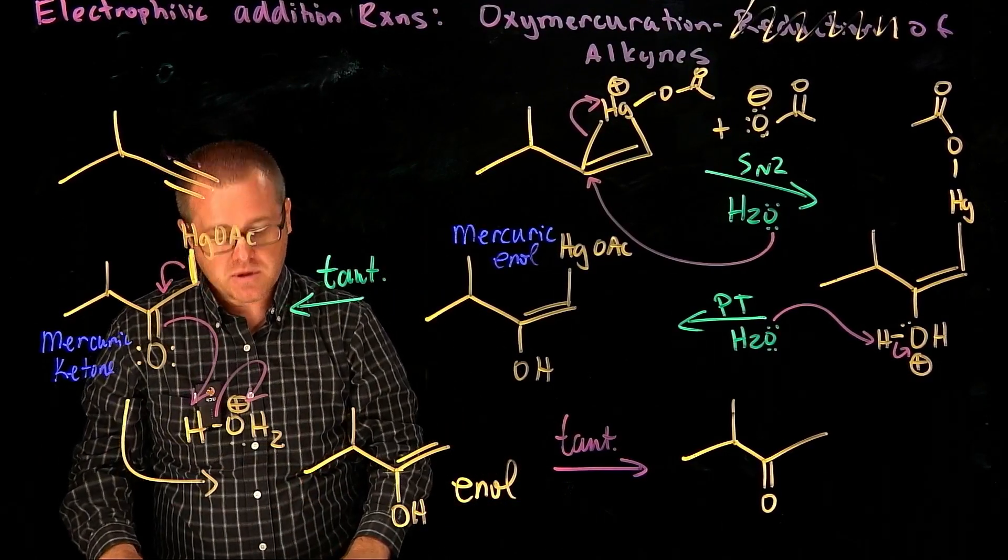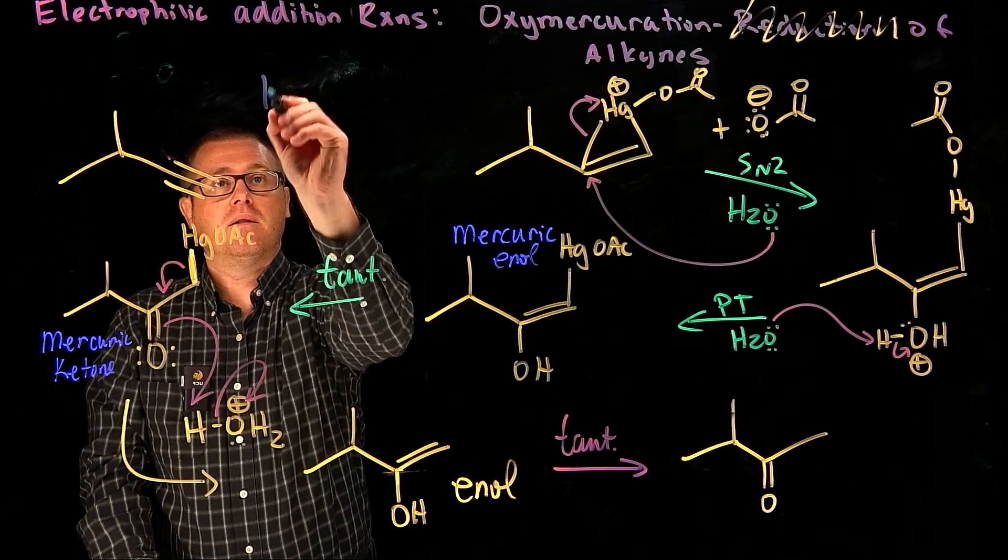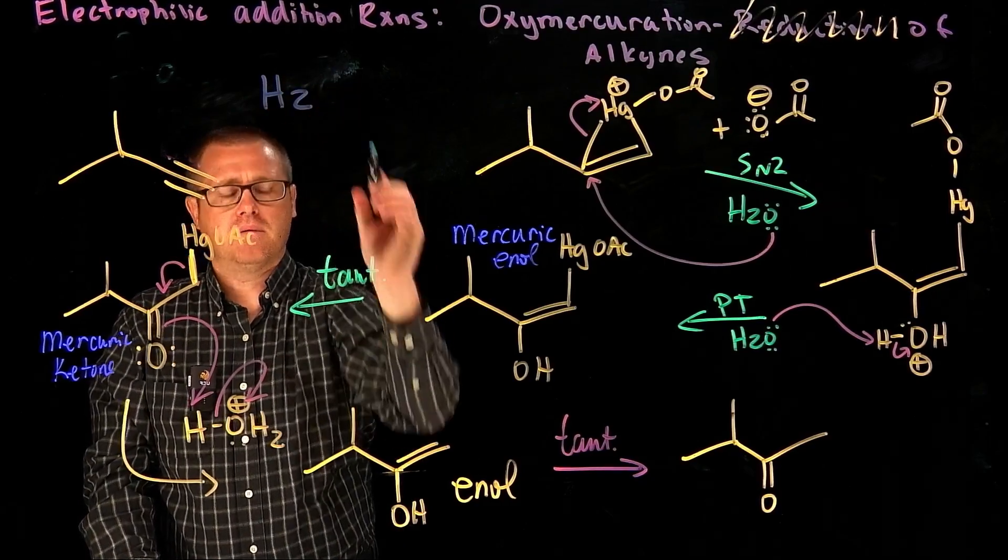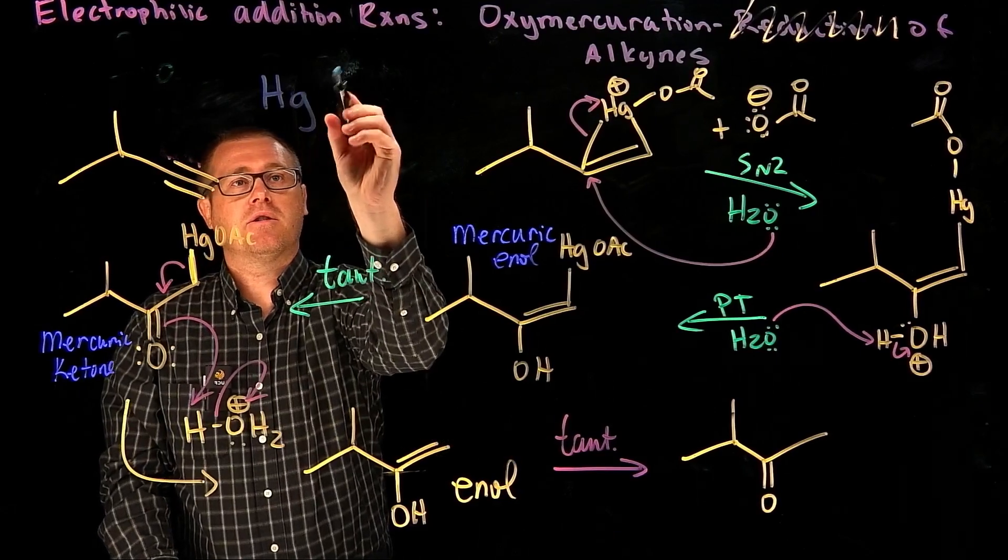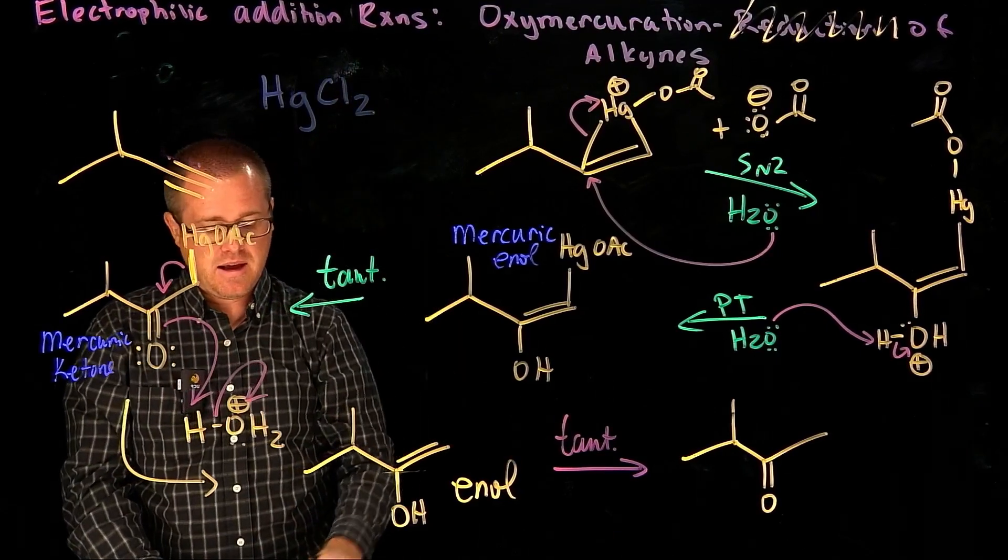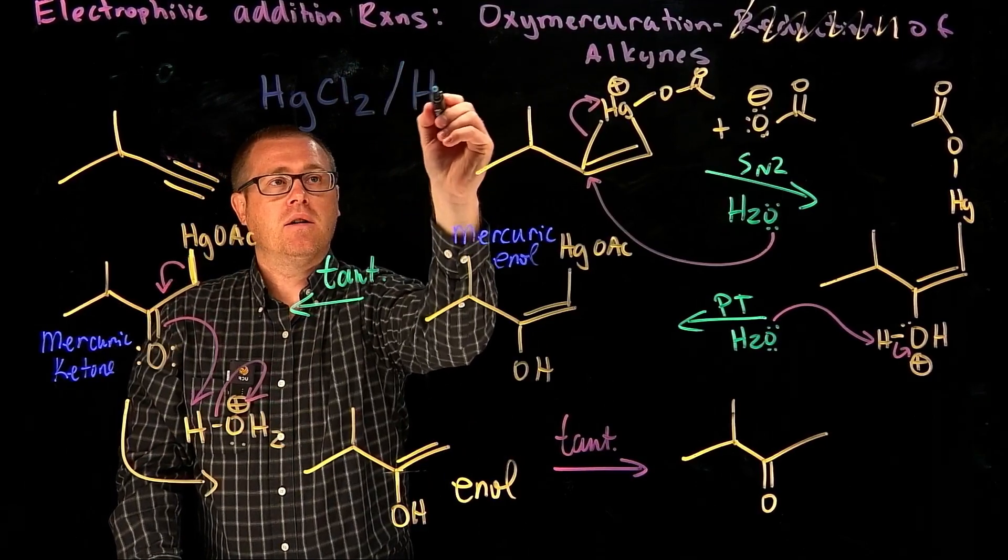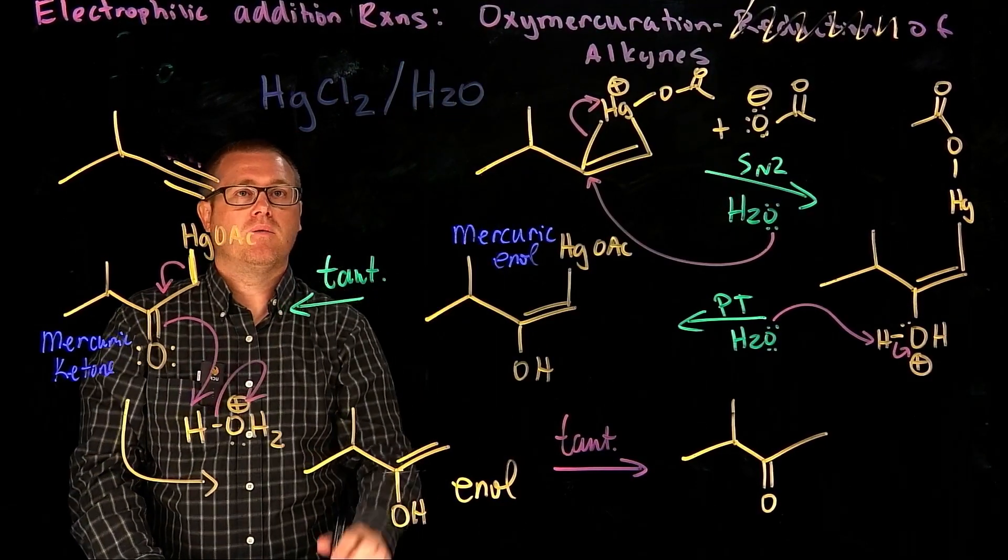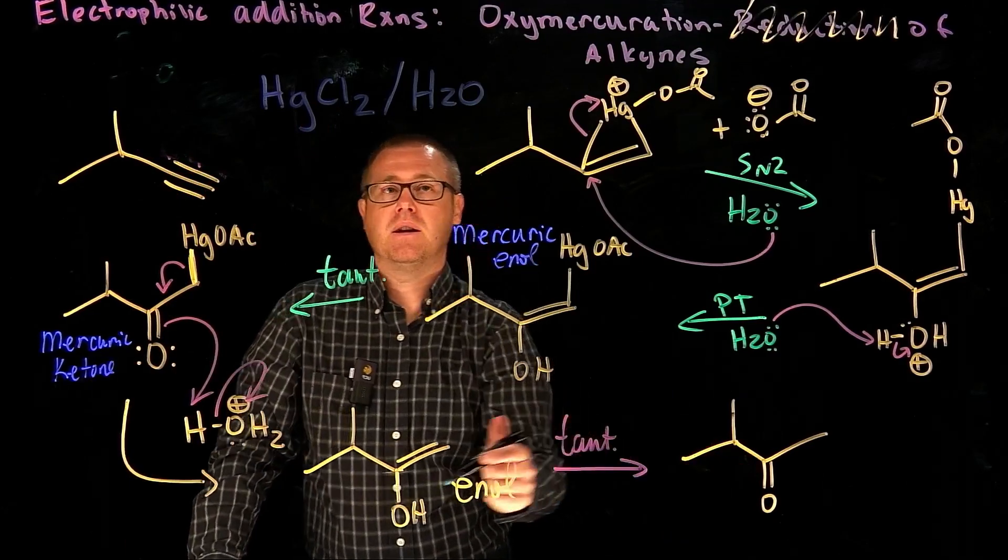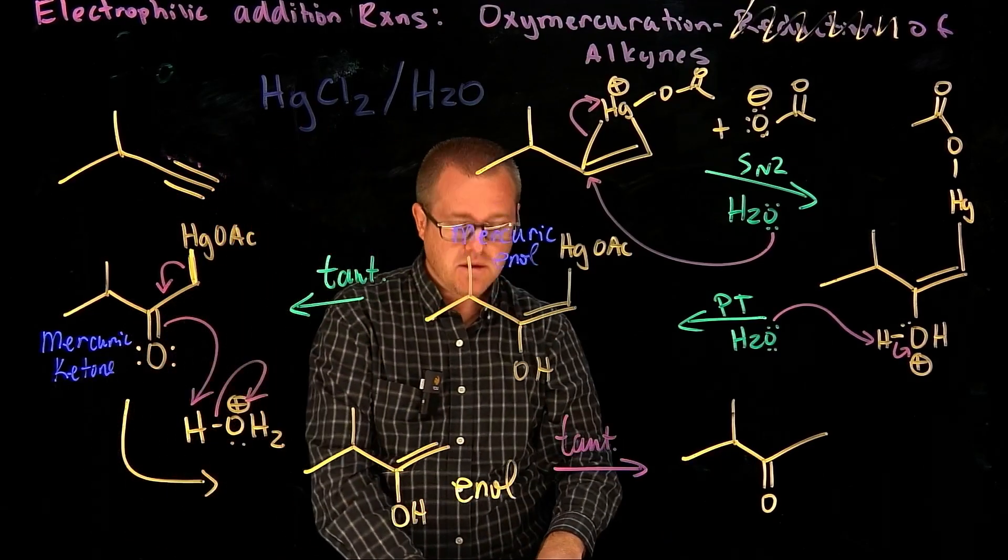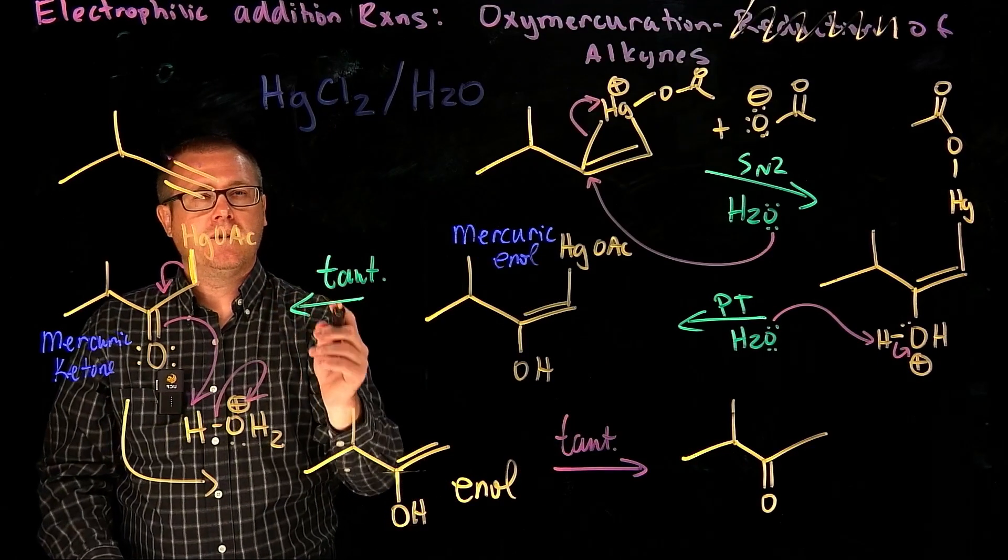So if you take your alkyne right here, I want to show you some other reaction conditions that will get you to the same product. We can use mercury(II) chloride. If we do that in water, we would go from here all the way to there. So that's one condition.